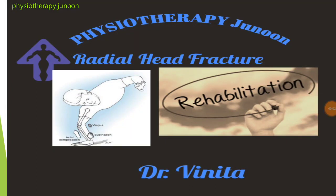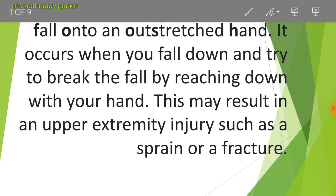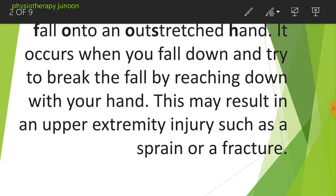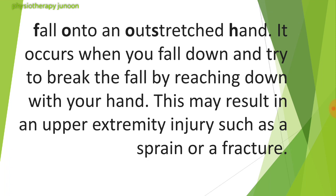Hello, welcome to Physiotherapy Genome. I'm Dr. Vinita and today's video is on fracture of the radial head. The radial head fracture occurs due to a fall on an outstretched hand. It occurs when you fall down and try to break the fall by reaching down with your hand, which may result in an upper extremity injury such as a sprain or a fracture.